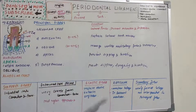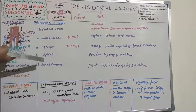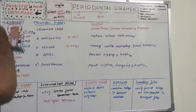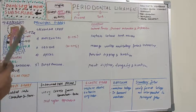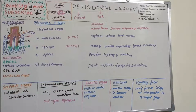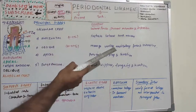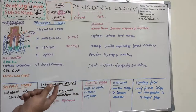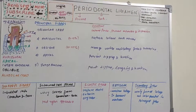The functions of these fiber groups: the alveolar crest group retains the tooth in the socket, opposes lateral forces, and prevents both extrusion (moving away from the socket) and intrusion (moving towards the socket), while also protecting deeper periodontal ligament structures. The horizontal group restrains lateral tooth movement, while the oblique group bears vertical masticatory stresses, transforming them into tension on alveolar bone and resisting intrusive forces.